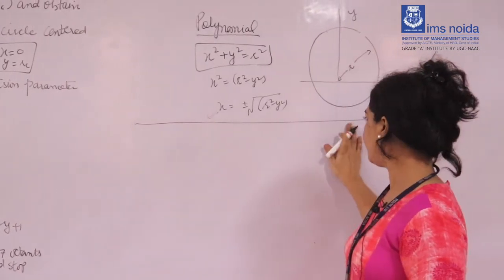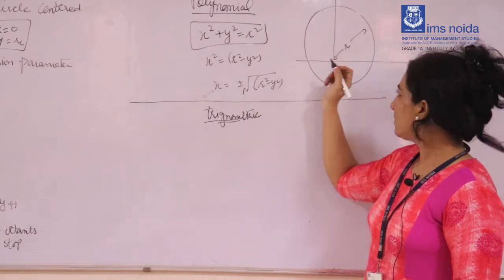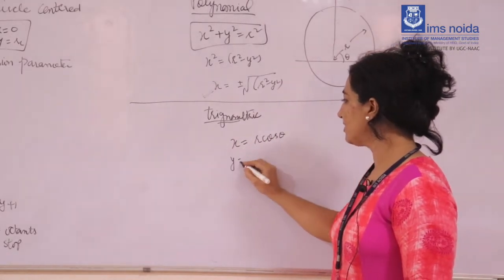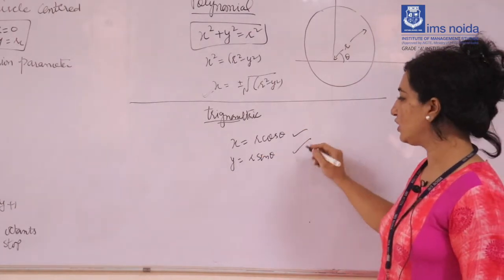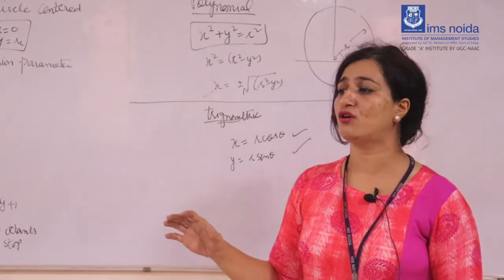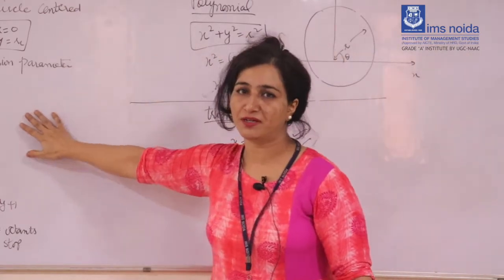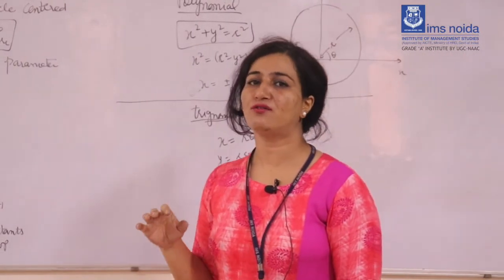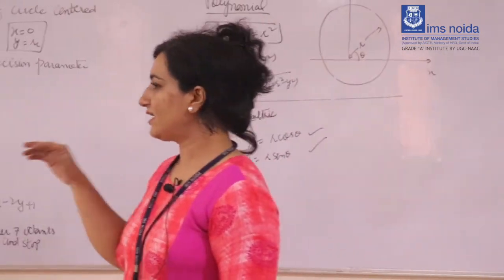The second method you studied in school is the trigonometric method. If r is the radius and theta is the angle, the formulas are x = r·cos(theta) and y = r·sin(theta). Based on the value of theta you can find x and y, but this method is also very complicated for computer graphics because we draw through software. Both methods fail, which is why we move to the algorithmic method — the midpoint circle algorithm.